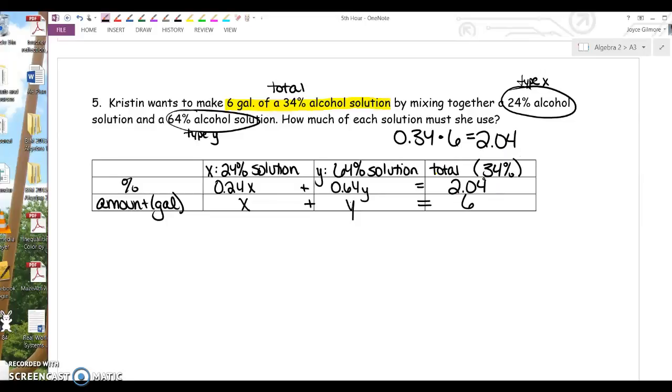That means that 2.04 of those gallons is pure alcohol, and that makes 34%. That is 34% of the 6. So, we want that 34% to be pure alcohol out of our 6. Does that make that problem make sense? How I've described those cells, hopefully.